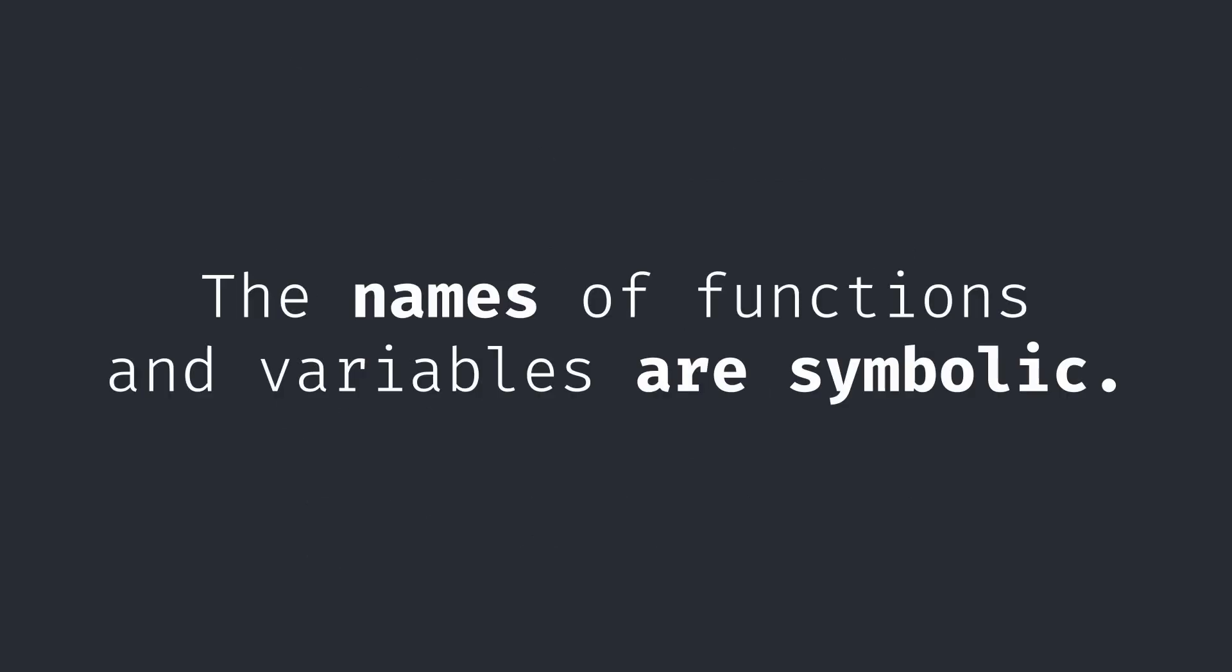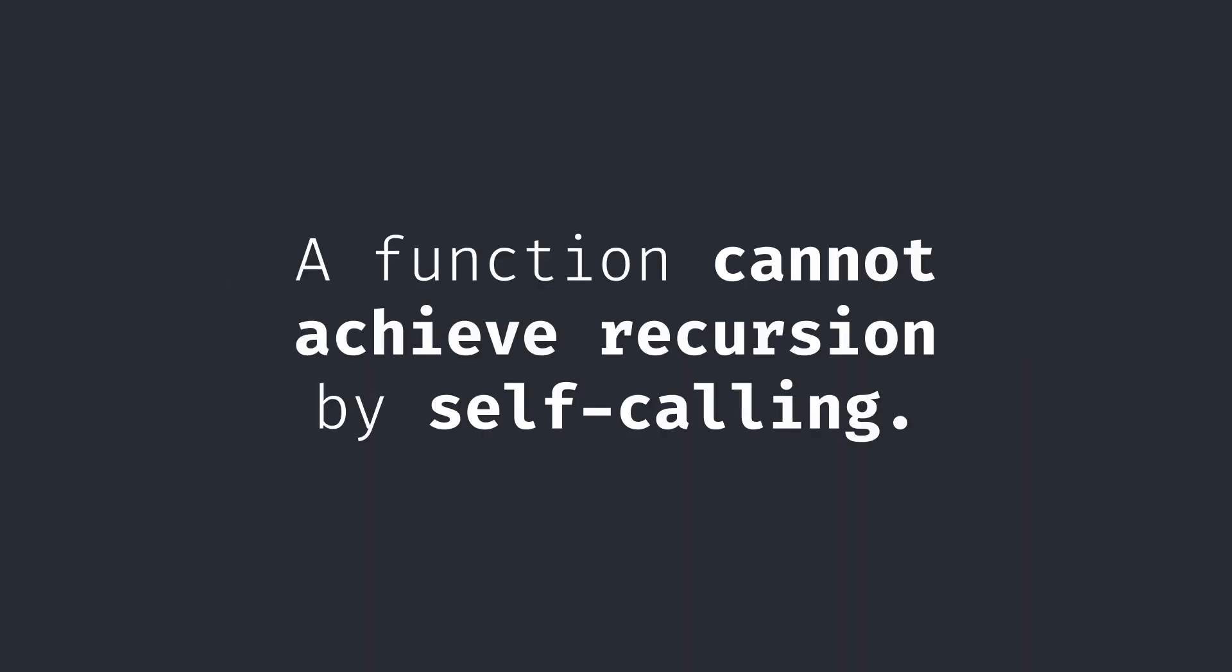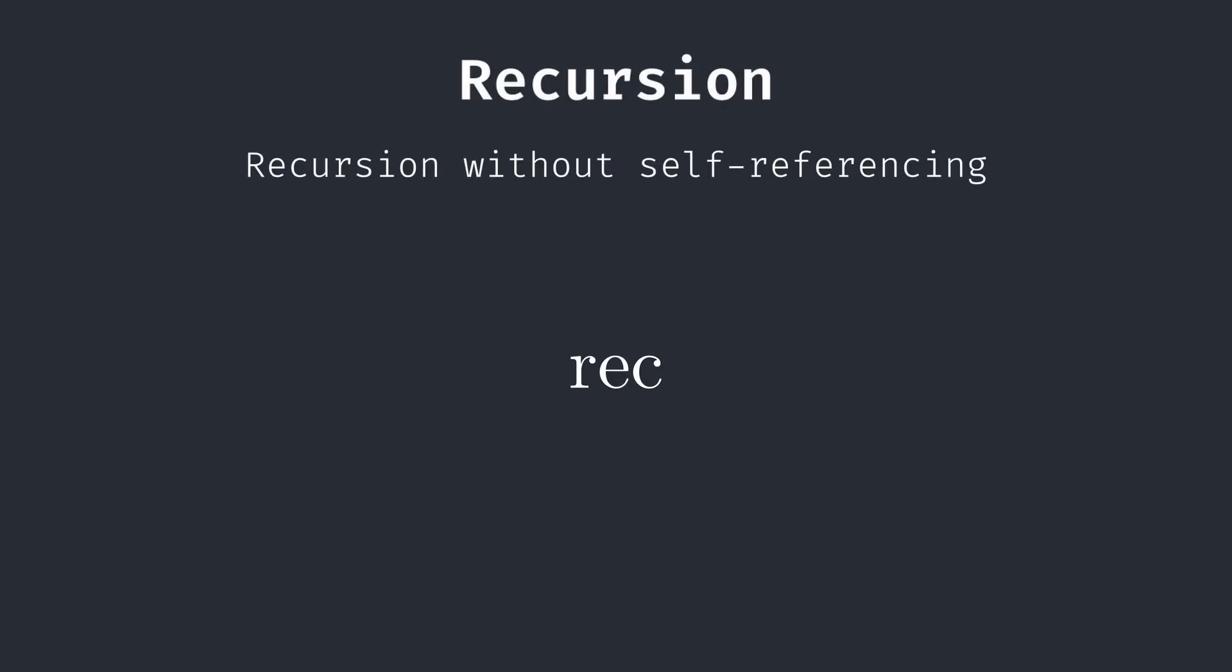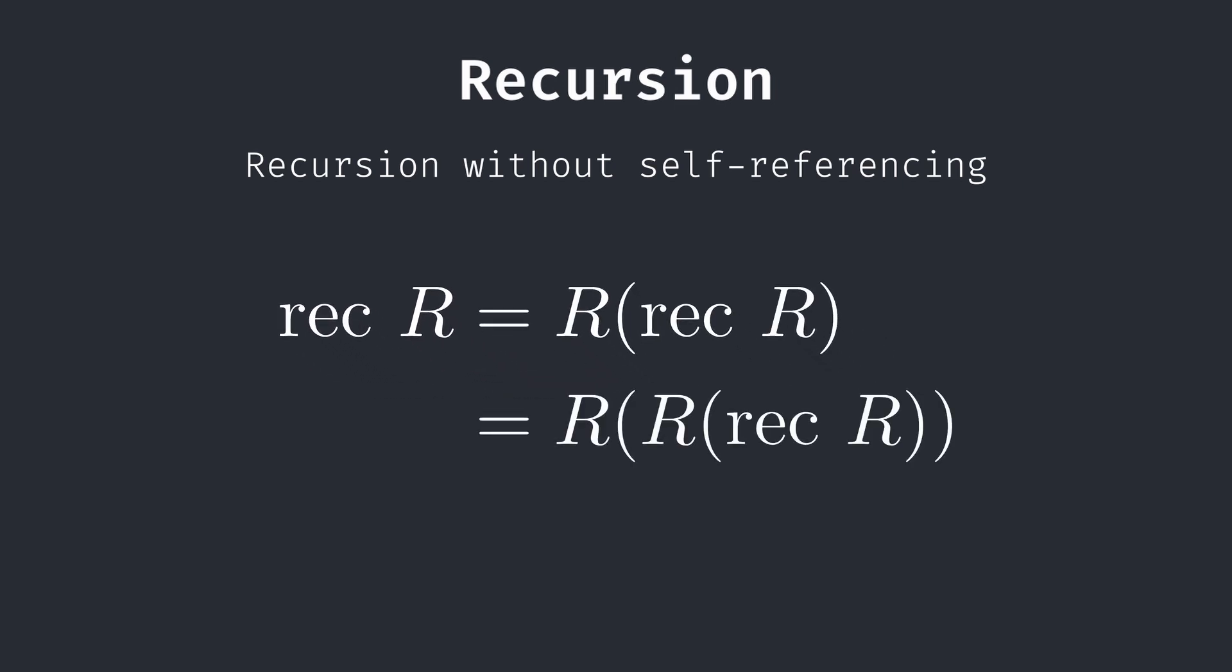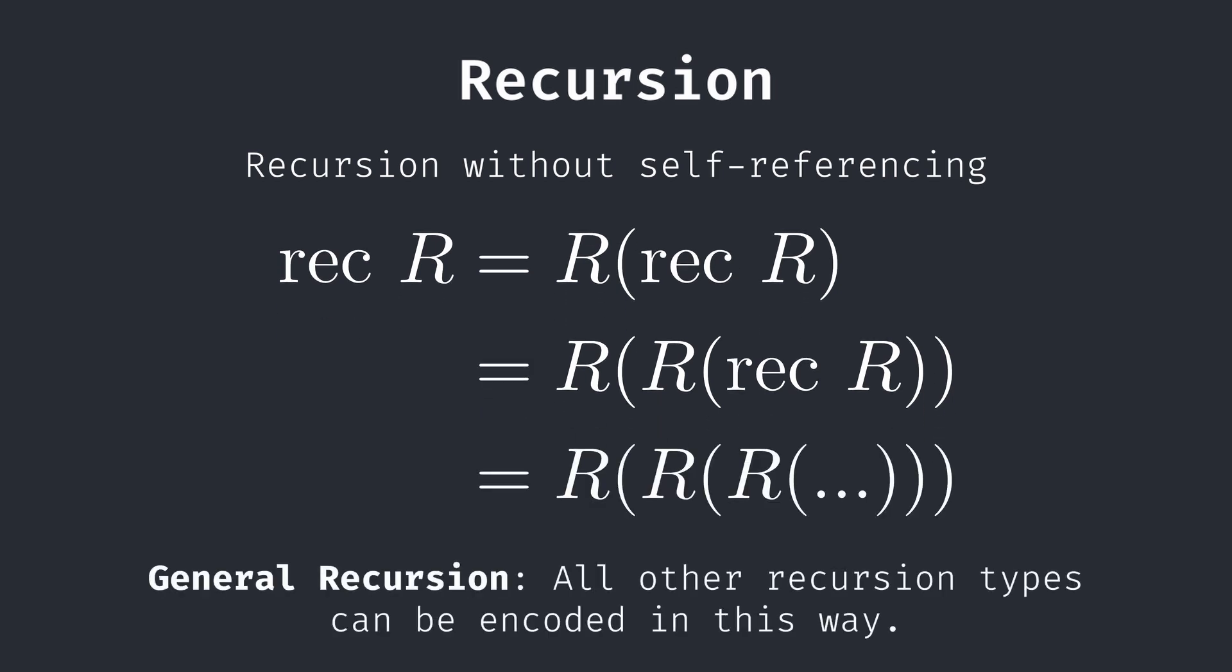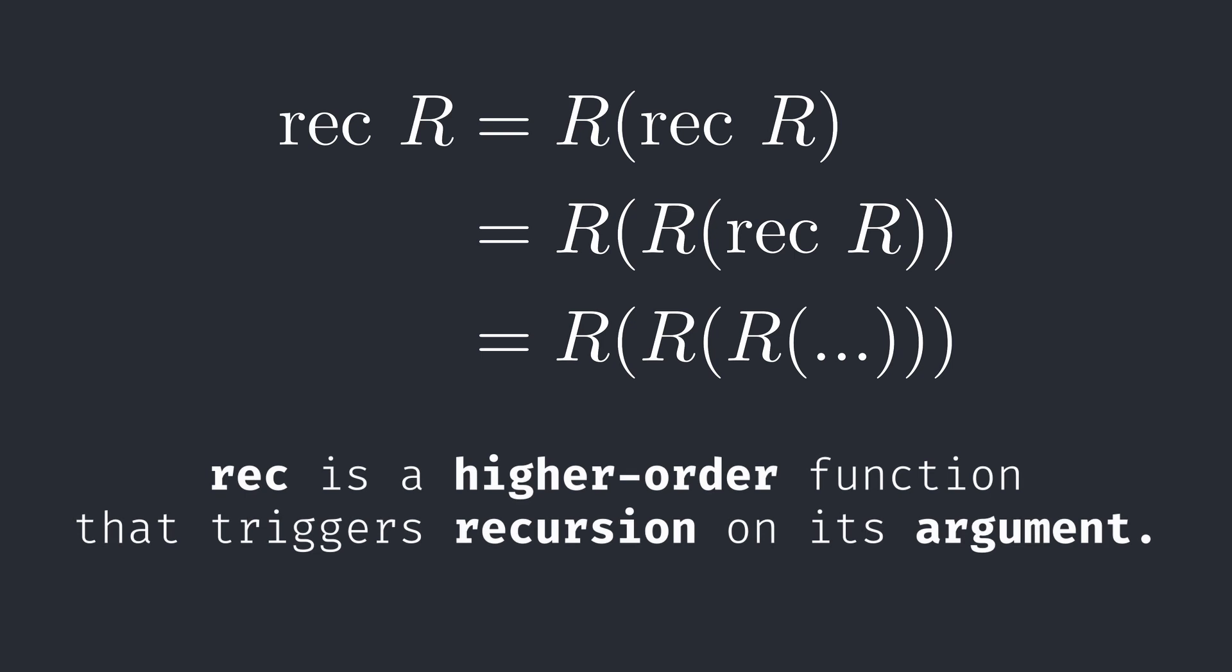In pure lambda calculus, the names of functions and variables are symbolic. That means a function can't achieve recursion by calling itself, because it has no way to refer to itself. However, we can achieve recursion in a different way. Let's assume there is a function REC for recursion, which is able to take an input function R and applies that function to REC of R. If we continue simplifying, we can see that this causes R to be indefinitely called on itself. This pattern is known as general recursion, and it can be shown that any other form of recursion can be encoded in this way. But on a functional level, consider what is happening. REC is a higher order function, which takes a function and triggers recursion on it, without R needing to directly refer to itself in its body. This is exactly how we will encode recursion without named functions.